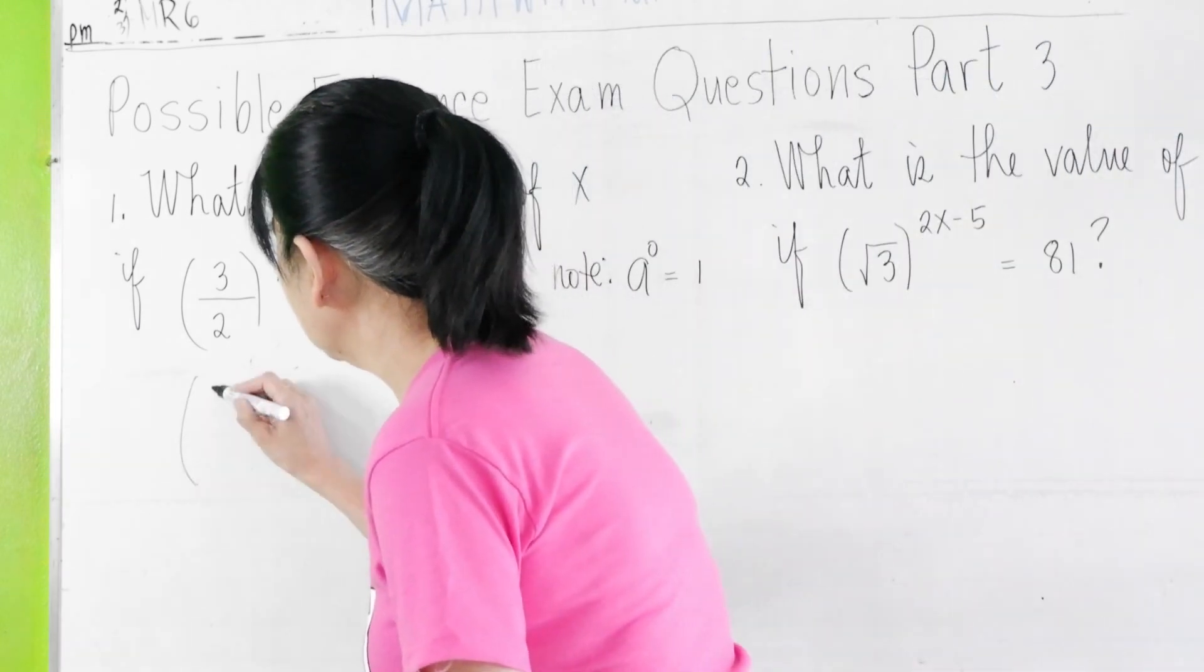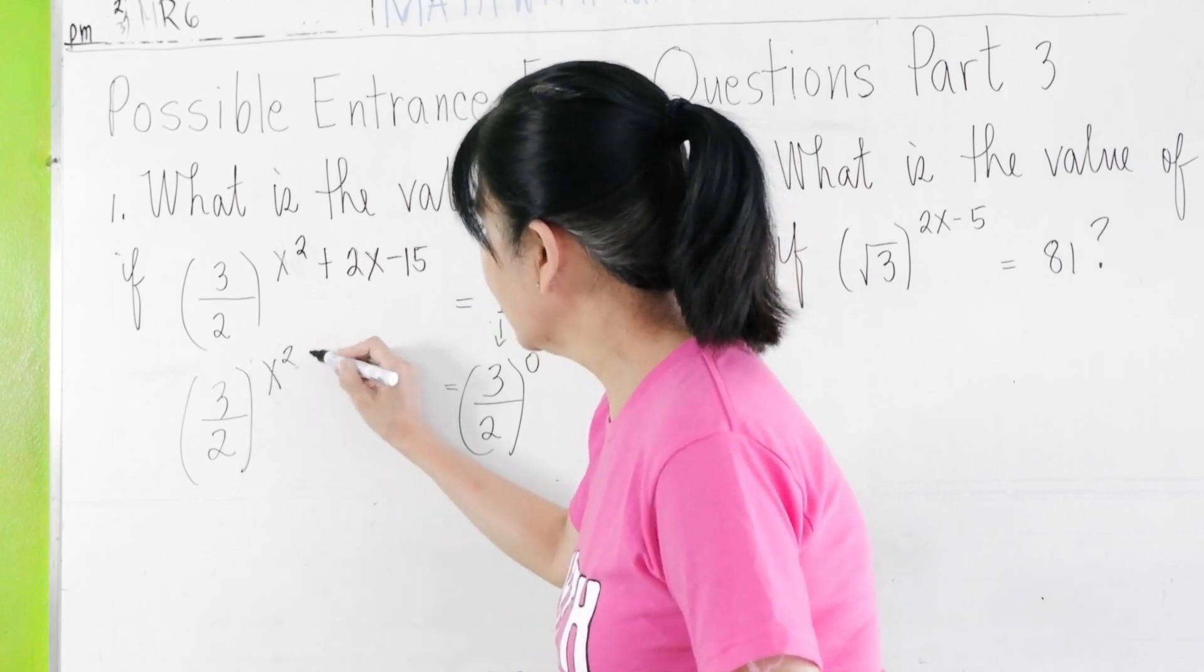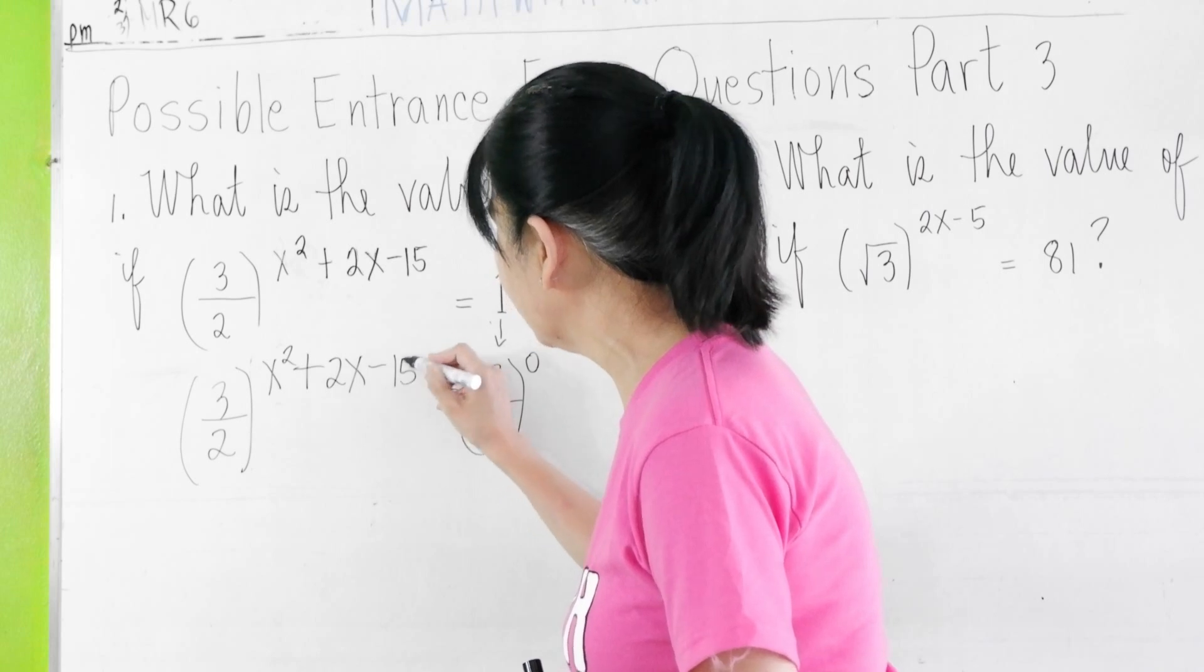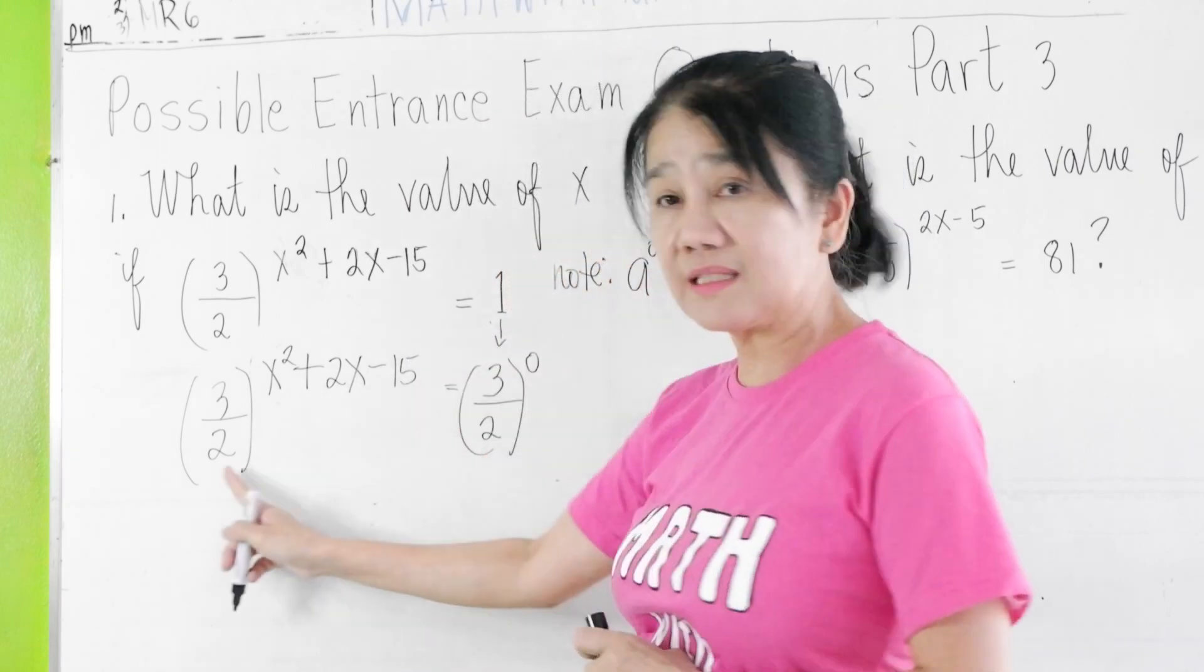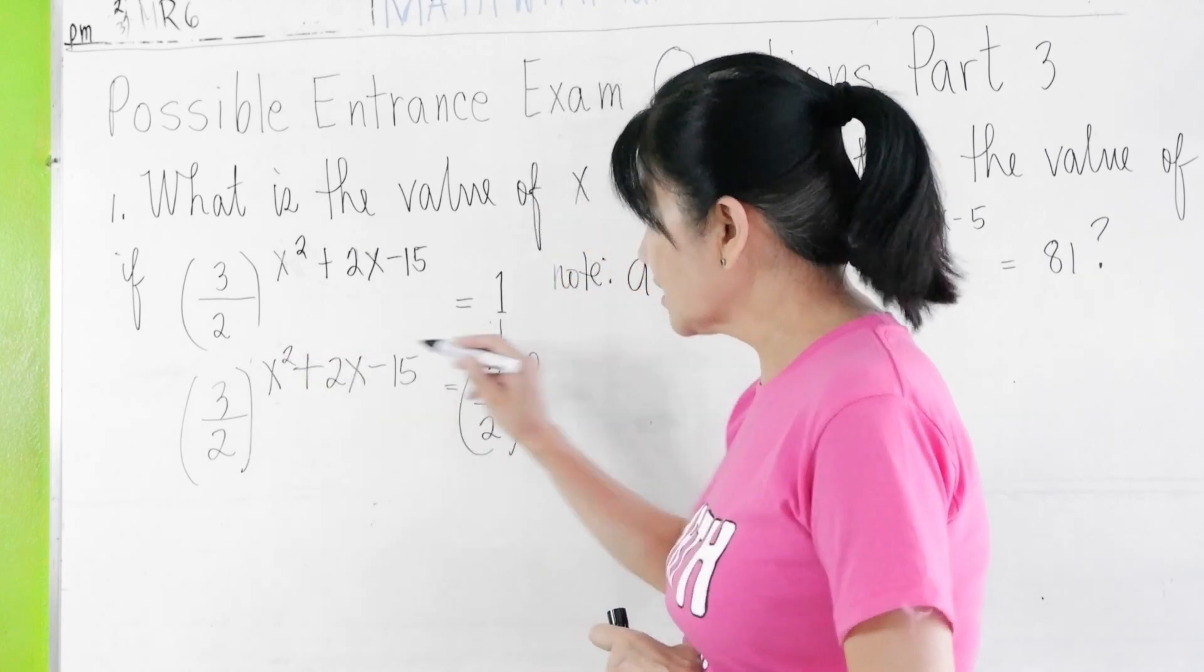Now, this is now (3/2)^(x² + 2x - 15). Since the bases are now the same, you can now equate the exponents.